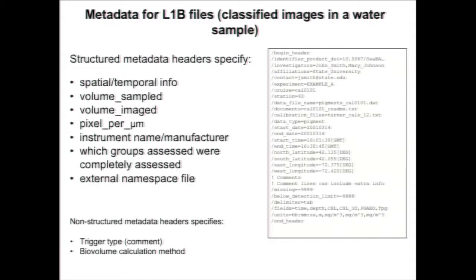A typical SEABASS header includes station name, investigators, time, date, lat/lon, and every piece of information associated with a particular sample. In addition to the typical SEABASS header you'd see with optical data, we will also require that a user submitting taxonomic data include information such as volume sampled, volume imaged, camera resolution, pixels per micron, and also their namespaces.